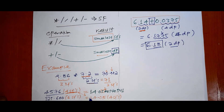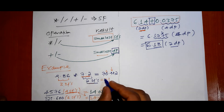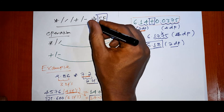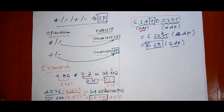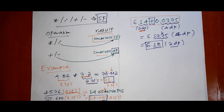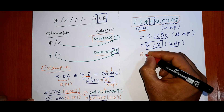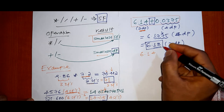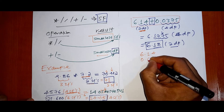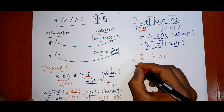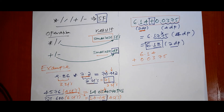So 6.18 is the appropriate solution for this example. The operation involves significant figures and decimal places. The appropriate solution uses the decimal place rule — here the result is 6.18 from adding 6.14 and 0.0375.